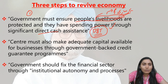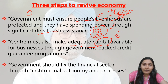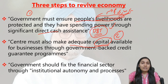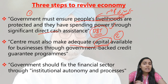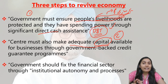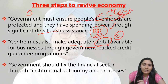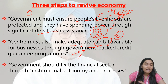The second step: the central government must also make adequate capital available for businesses through a government-backed credit guarantee program. Businesses, especially small businesses, are struggling to find capital for revival after the lockdown and COVID-19 outbreak. The government should provide credit guarantees for loans taken by these businesses.